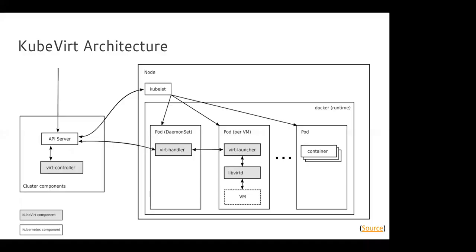This is the architecture. We have the usual operator/controller pattern — a custom resource watched by a controller, which speaks to a node agent called the virt-handler. Interestingly, the VM ultimately runs inside a pod, which makes it transparent for many projects dealing with Kubernetes. To them, it just looks like a pod, whether it's a VM or a container.